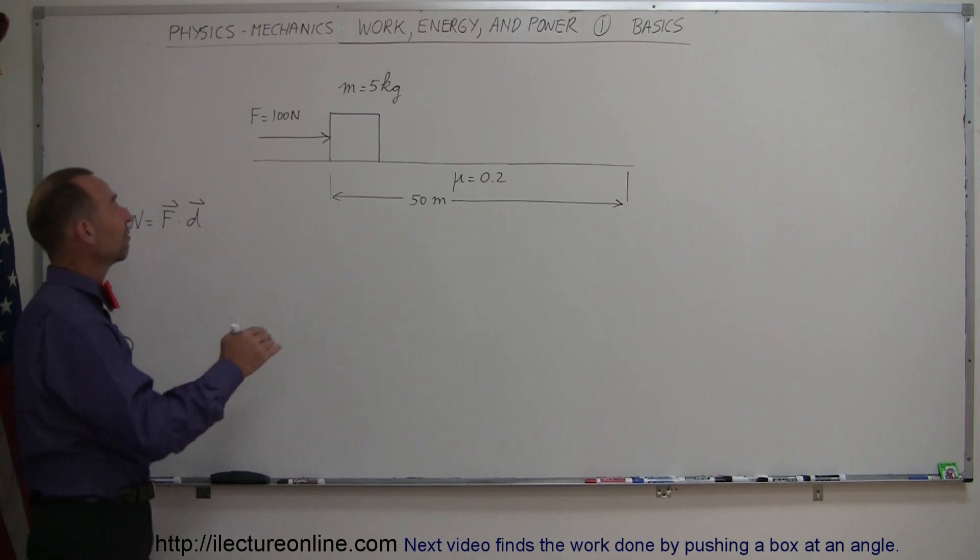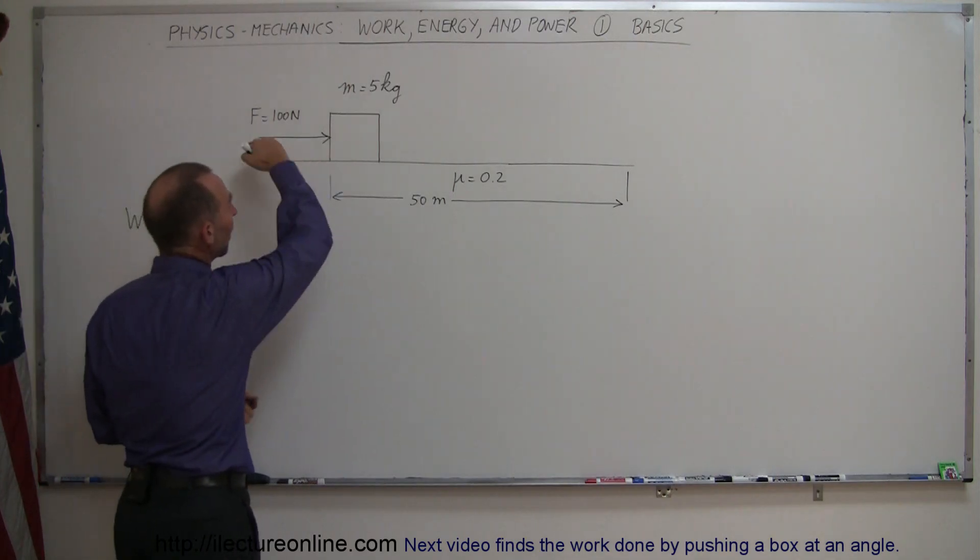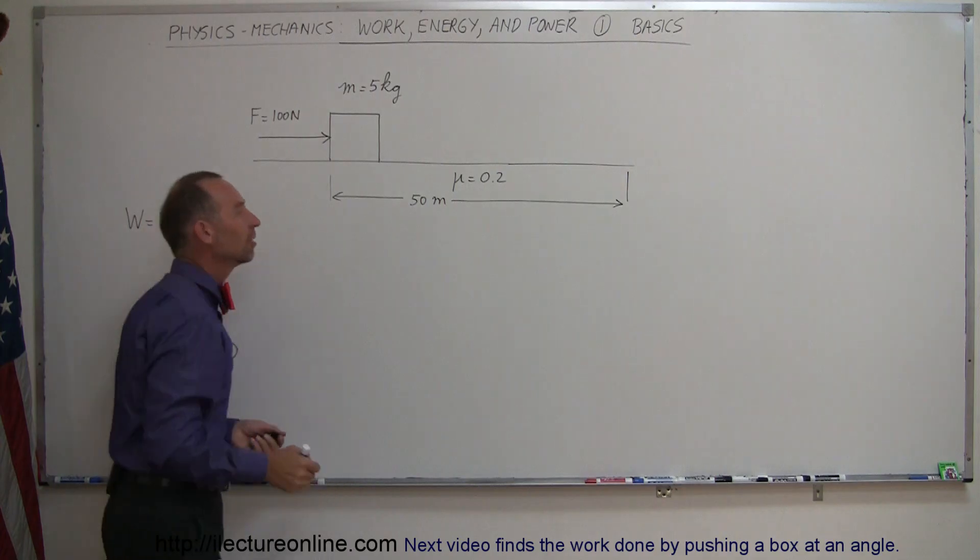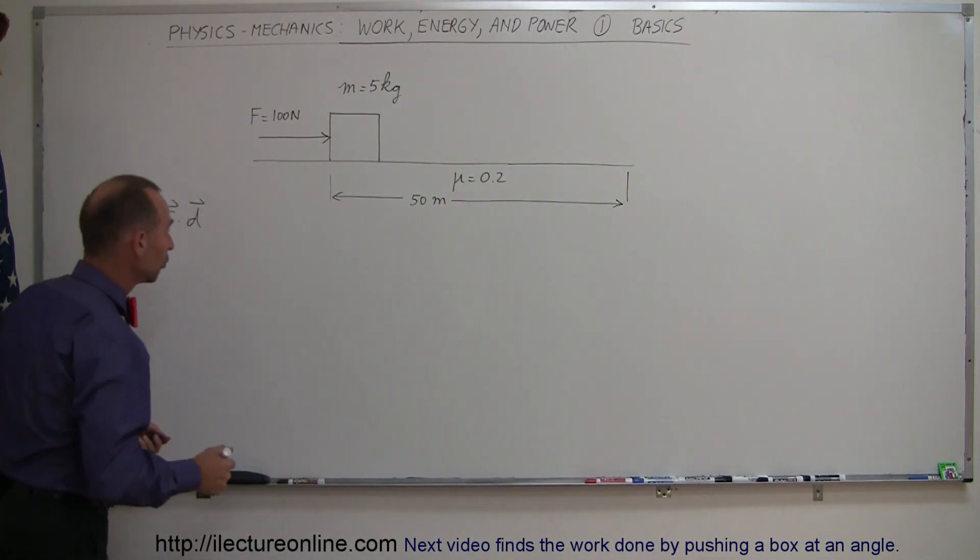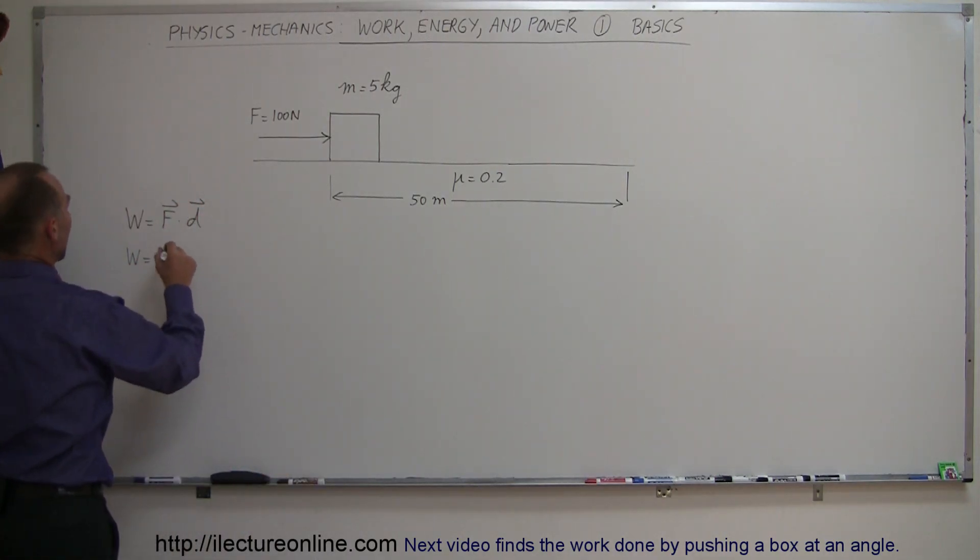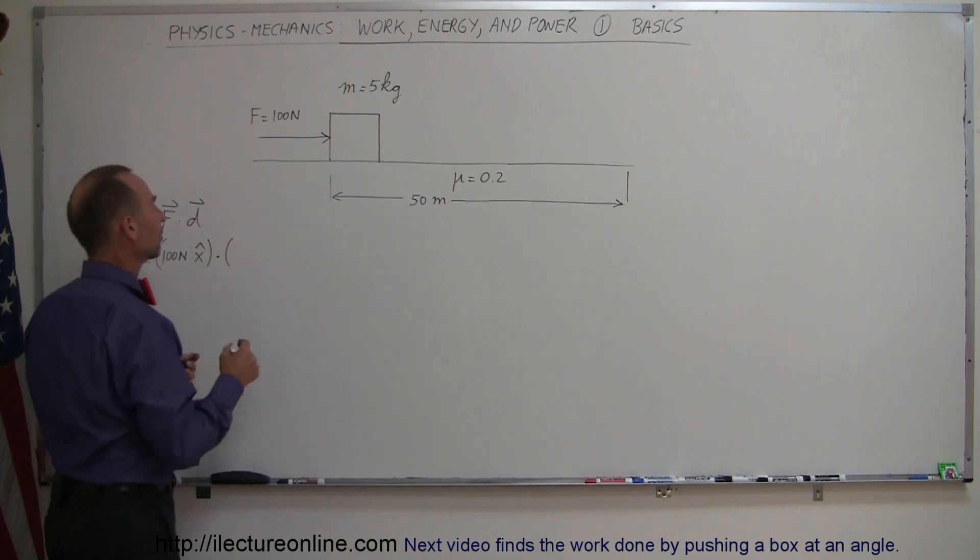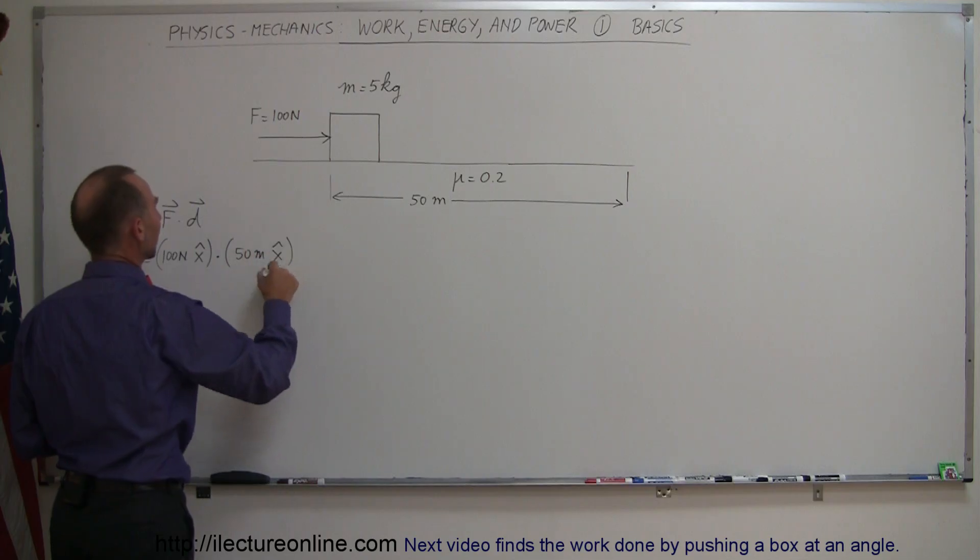So in this particular case, we have a force that's pushing to the right in the positive x direction, and we have a 50 meter displacement in the positive x direction as well. So the way this would work is that the force is equal to 100 newtons in the positive x direction, and we dot that with the displacement, which would be 50 meters in a positive x direction.